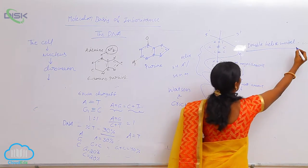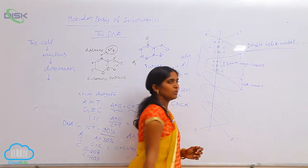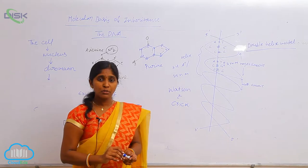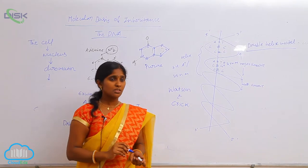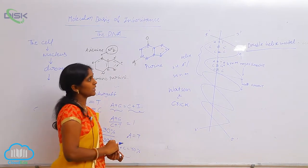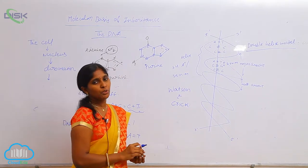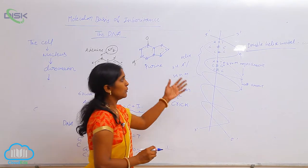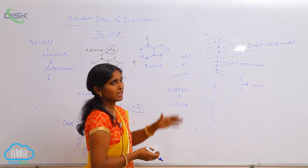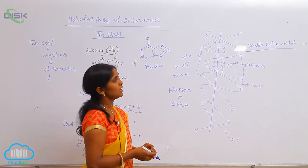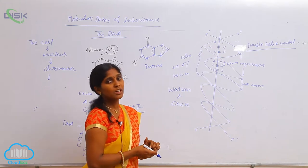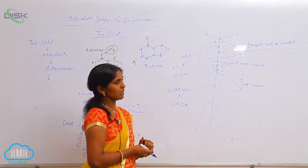DNA is nothing but a polymer of deoxynucleotides. Many nucleotides are polymerized to form DNA, and that is in the form of the double helix model.